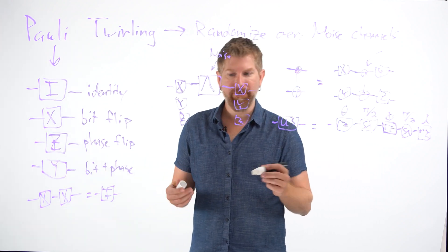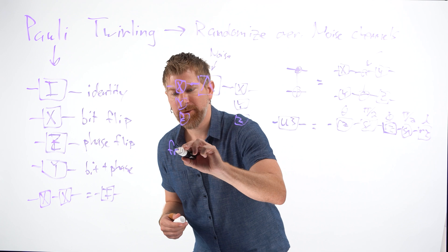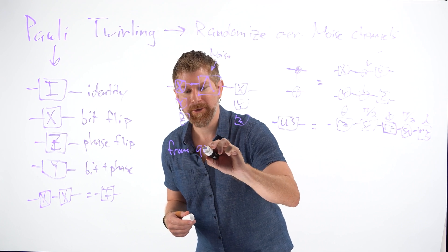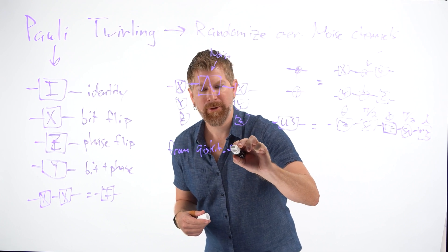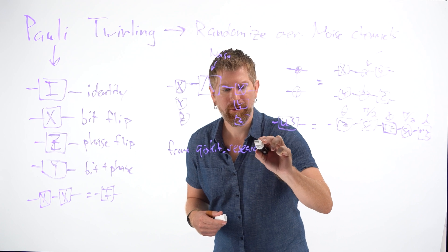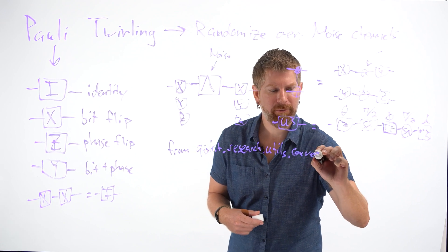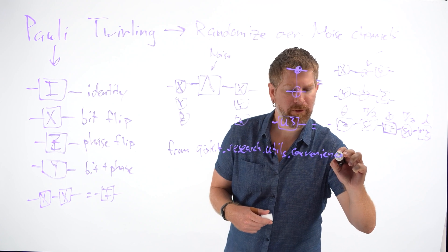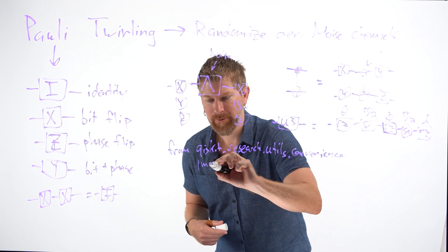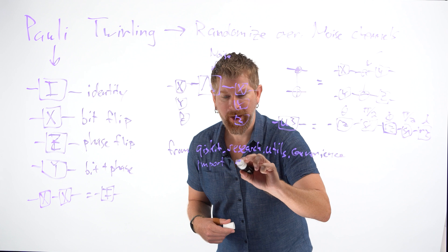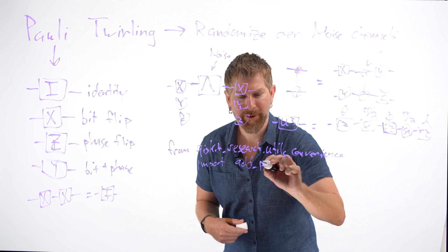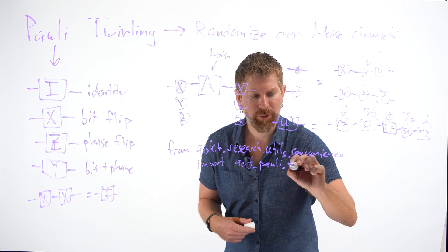We can easily add these using the Qiskit research module. So if we go to from qiskit_research.utils.convenience import add_pauli_twirls.